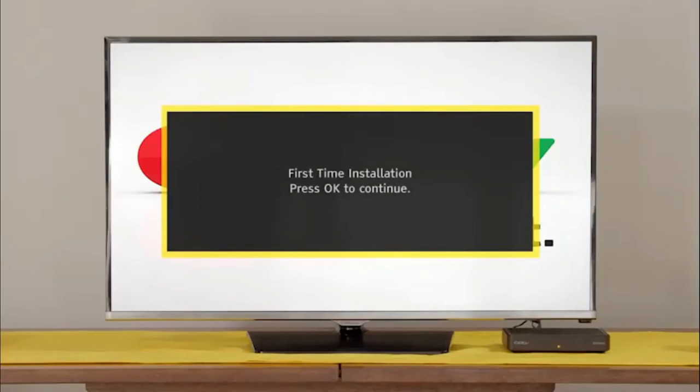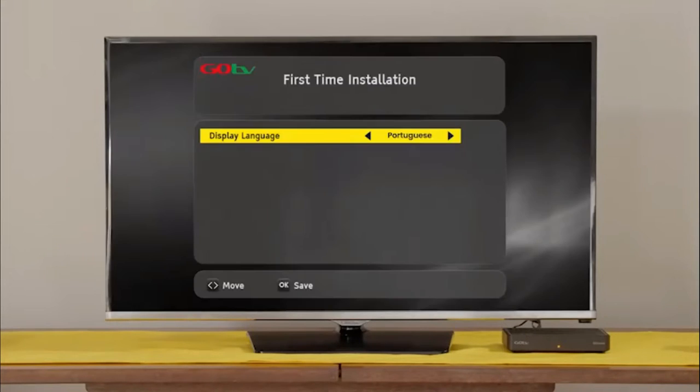After a few moments, the GoTV logo will appear, followed by the setup screen. Select your language preference and the country you are in. Next, on the active antenna menu, select Power Off.